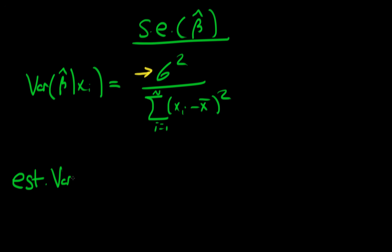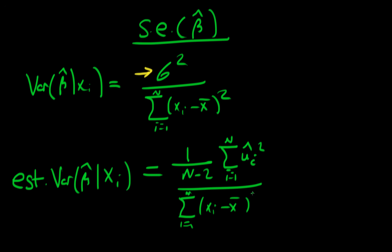We have the estimated variance of beta hat given xi, which equals sigma hat squared. We derived this in the last video for the bivariate case as 1 over n minus 2 times the sum of i equals 1 to n of u hat i squared, divided by the sum of i equals 1 to n of xi minus x bar all squared.